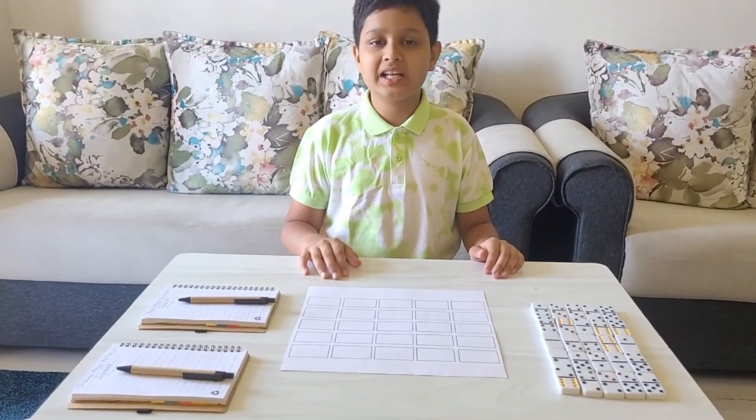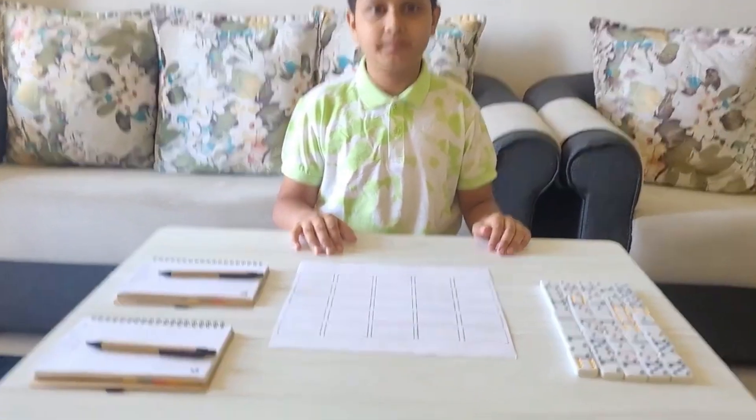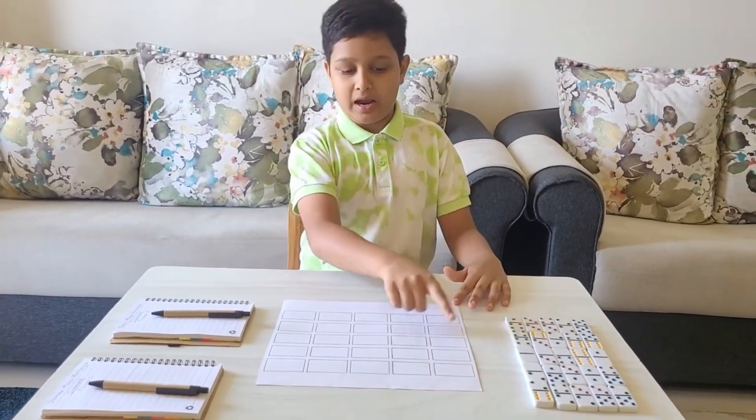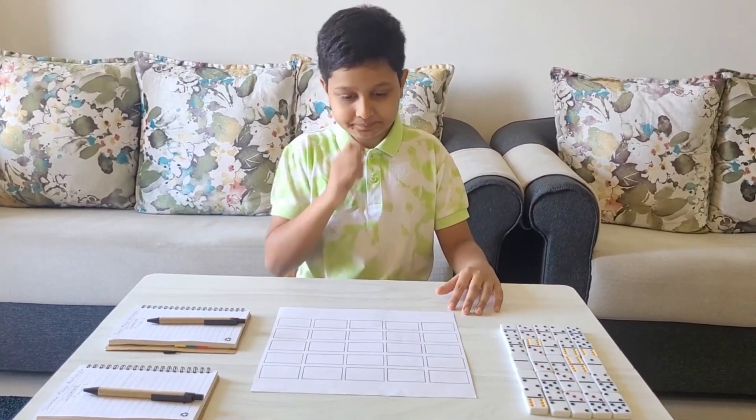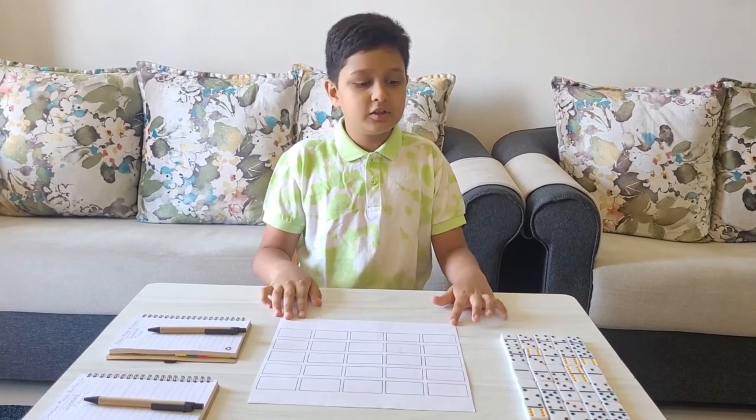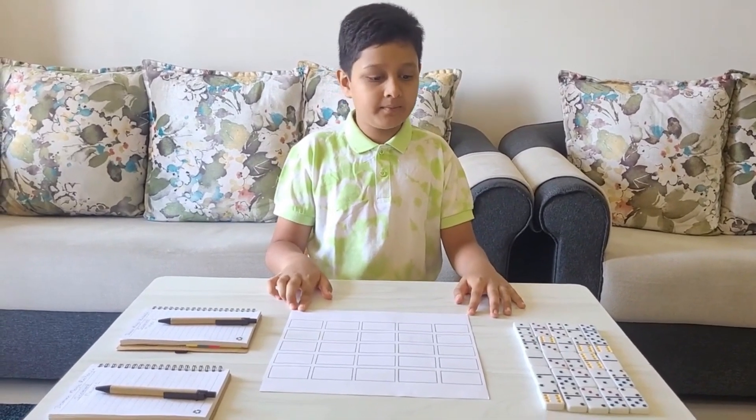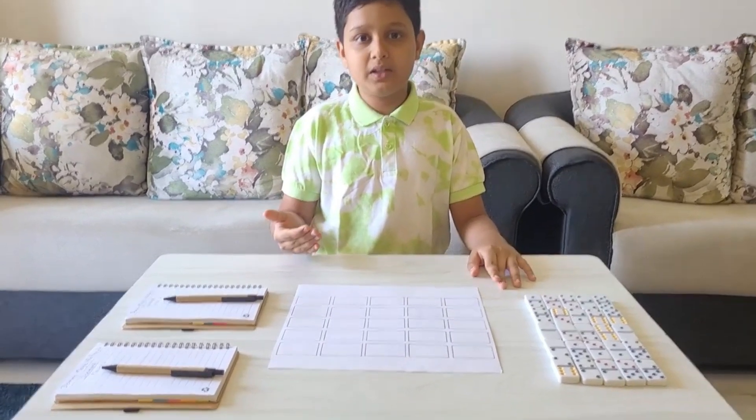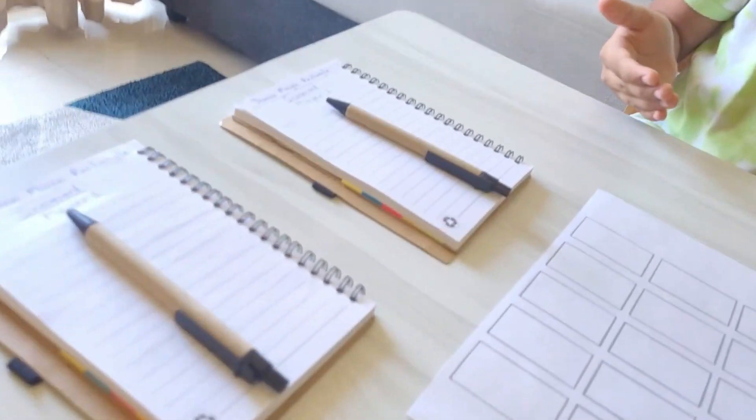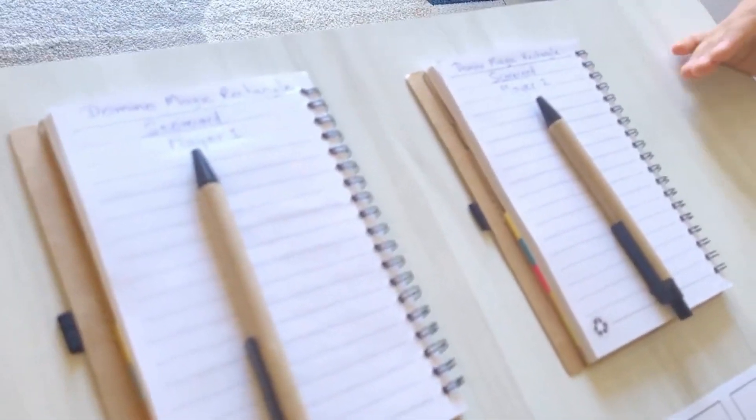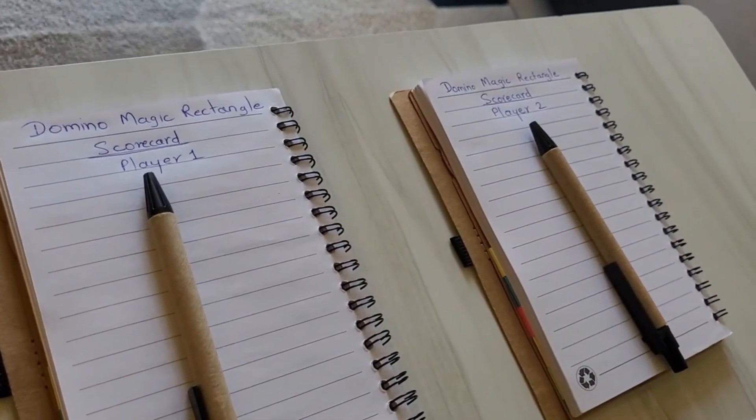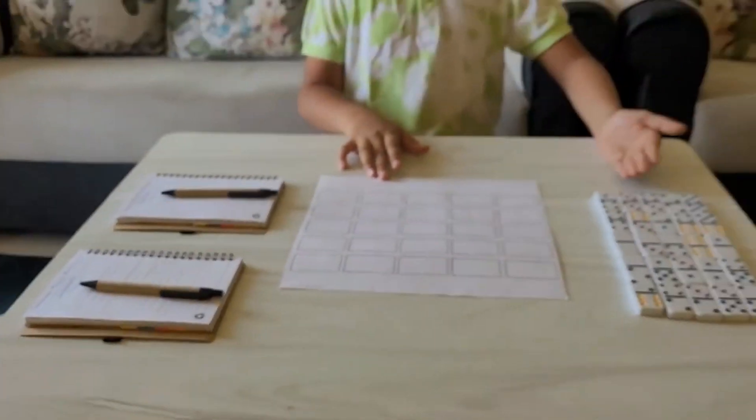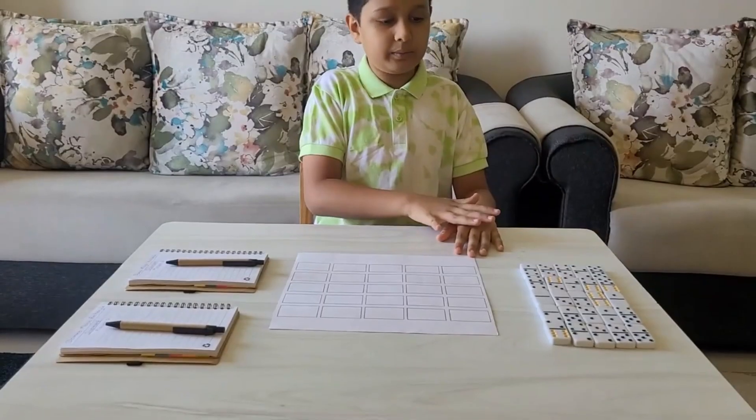This is the domino magic rectangle problem. I have made a game that uses dominoes and magic squares. So how do we play this game? Right now there are two players, but the number of players can extend up to four players. Player one takes a domino from here, any random domino, and places it anywhere on the board.